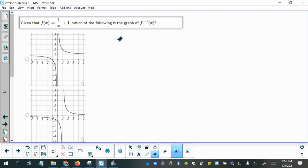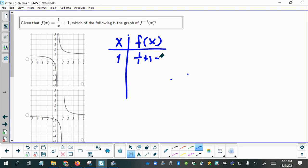For instance, I can make a table for my f function, and let's just say I start plugging in values for x. So let's pick something like 1. If I plug in 1 for x into this function here, I'll have 1 over 1 plus 1, which equals 2.